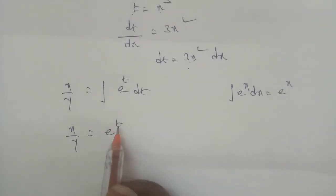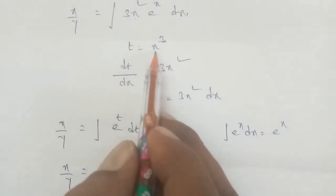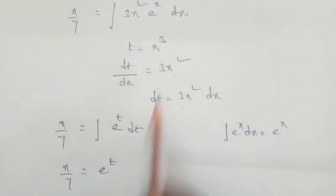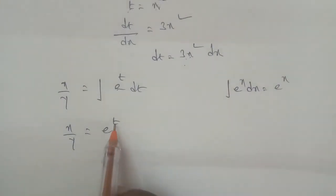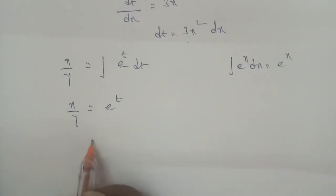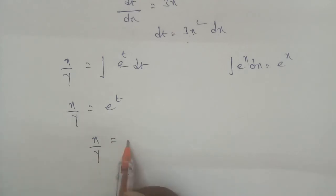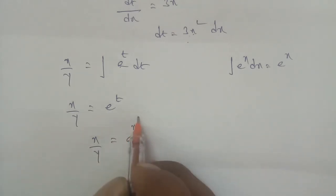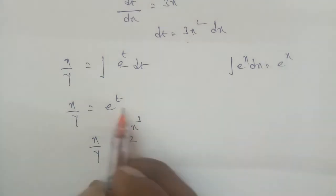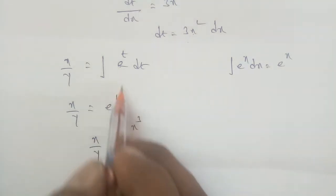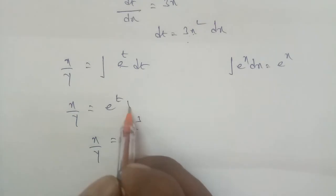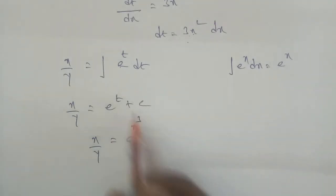Now back-substitute t equals x cubed. So e to the power t becomes e to the power x cubed. Therefore, x by y equals e to the power x cubed, plus the constant C.